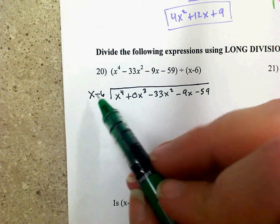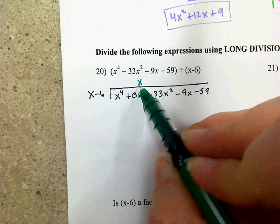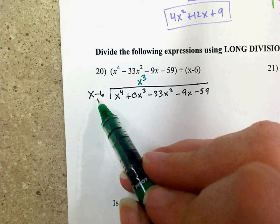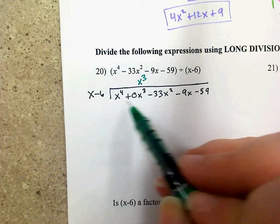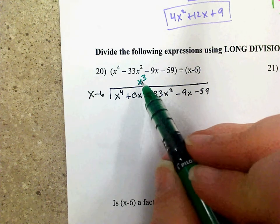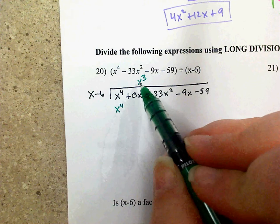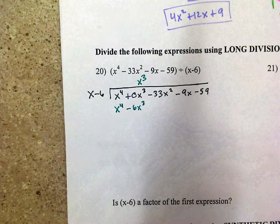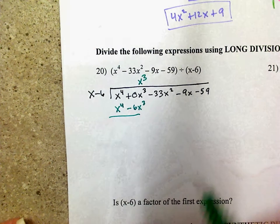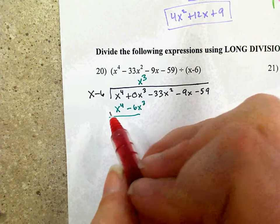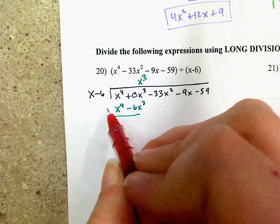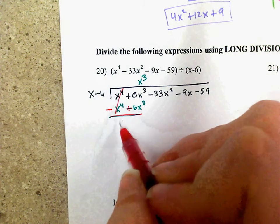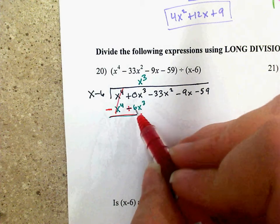I'll line it up with the x cubed position. A binomial goes into two terms. Multiply x cubed times x to get x to the 4th, and x cubed times negative 6 to get negative 6x cubed. Then subtract — change the sign: those cancel out. 0x cubed plus 6x cubed is 6x cubed. Bring down the negative 33x squared.